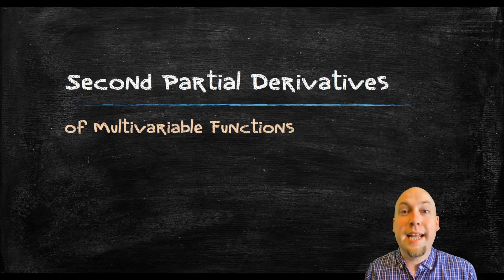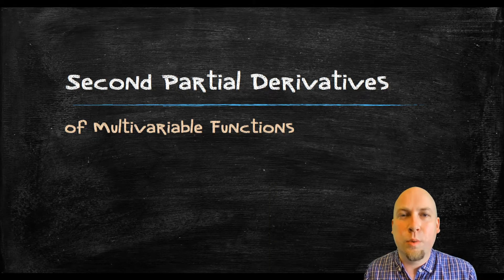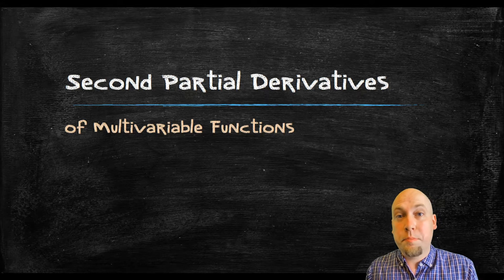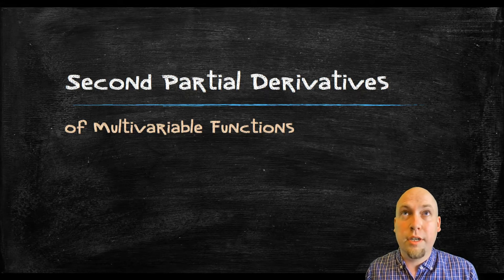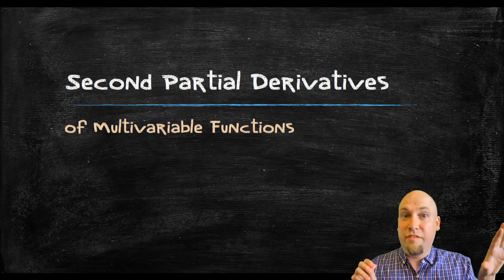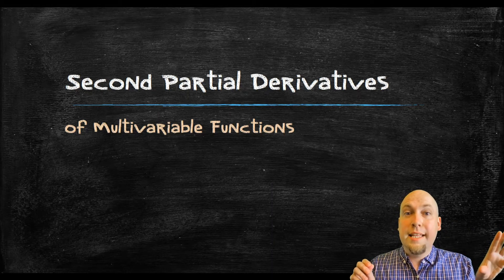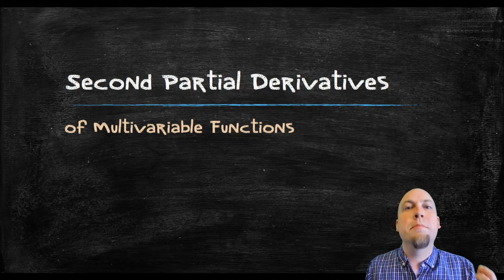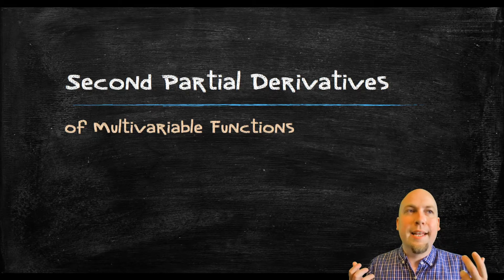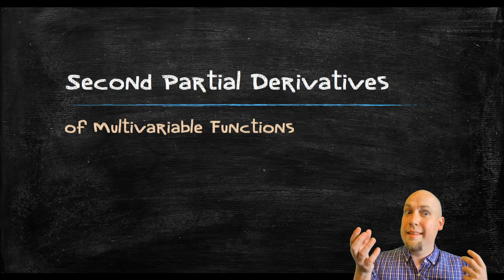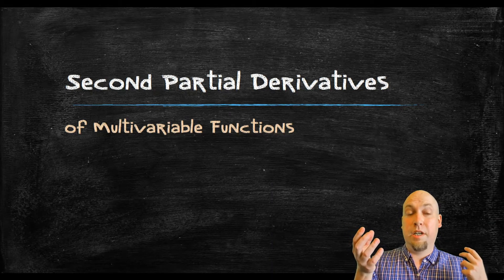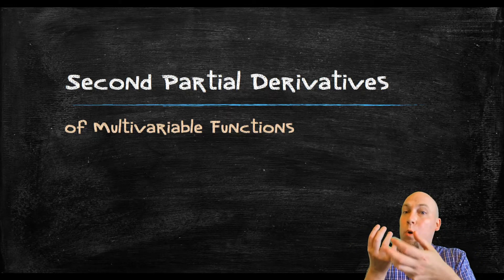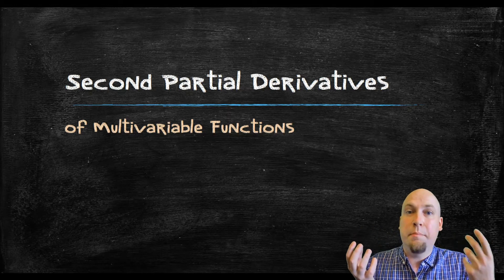Hey folks, my name is Nathan Johnston and today we're going to learn about the second partial derivatives of a function of two variables. We've already learned about the first partial derivatives of a multivariable function — you hold all of the variables except for one constant and then take the derivative with respect to that other variable. The second partial derivatives are just what you get if you take the derivative with respect to some variable and then take the derivative with respect to some variable again — maybe the same variable or maybe some other variable.